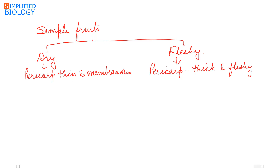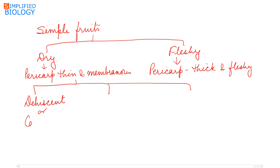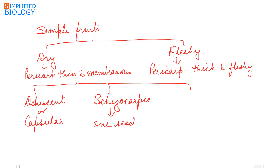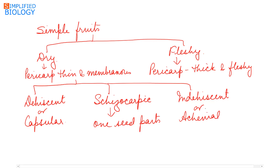Simple dry fruits can be further divided into three types. First, simple dehiscent fruits, also known as capsular fruits — these fruits burst open upon maturity, releasing the seeds. Second, simple dry schizocarpic fruits — these fruits break up into one-seeded parts upon maturity. Third, simple indehiscent or achenal fruits — these fruits do not open up on maturity.